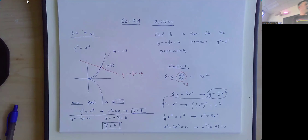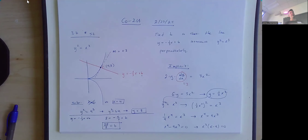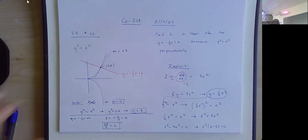Someone asked about related rates, but before we get there, let's talk a little more about the derivatives of the inverse trig functions. For inverse trig functions, there are a few derivatives you want to memorize. The derivative of arc sine of x is 1 over the square root of 1 minus x squared. The derivative of arc tangent of x is 1 over 1 plus x squared.